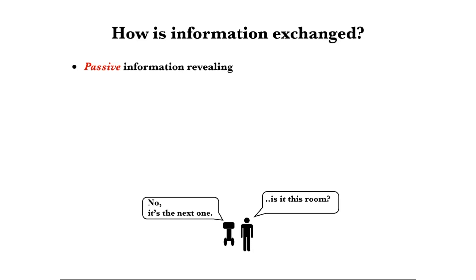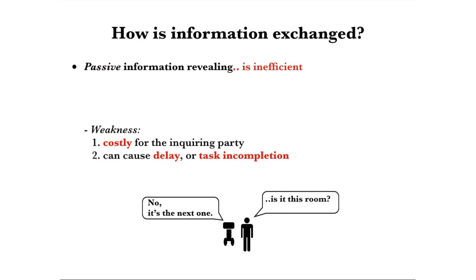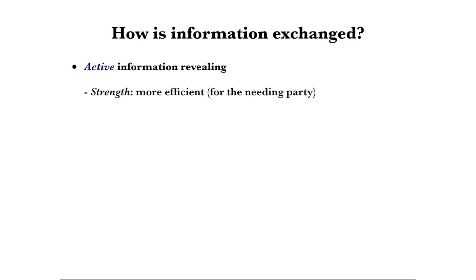So, how is information exchanged in teamwork? Going back to the navigation example, the uncertain human partner asks about the goal location and the robot answers. We refer to such form of communication as passive information revealing. This is convenient for the revealing party, yet it can be inefficient for the receiving party. It can be costly to prepare for questions while pending answers, and before then there is a delay caused by human hesitation.